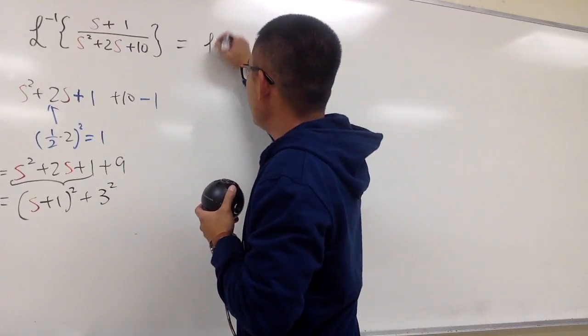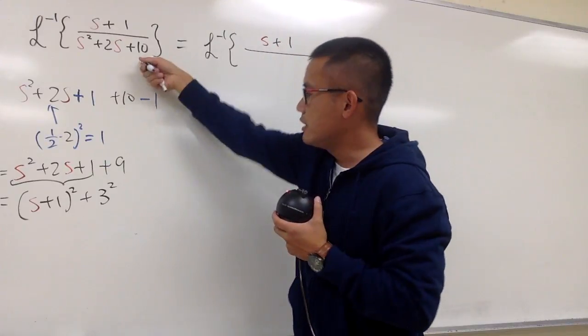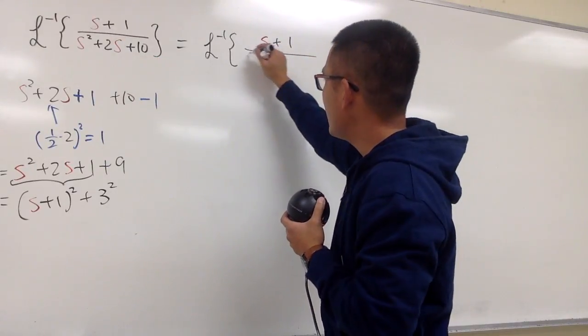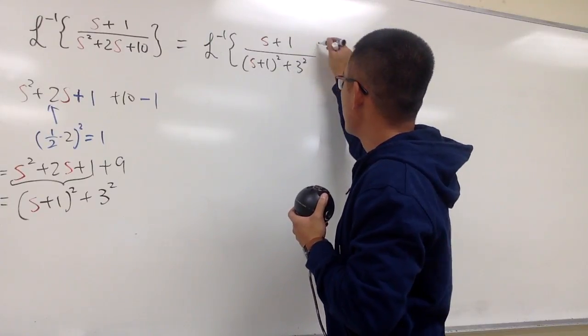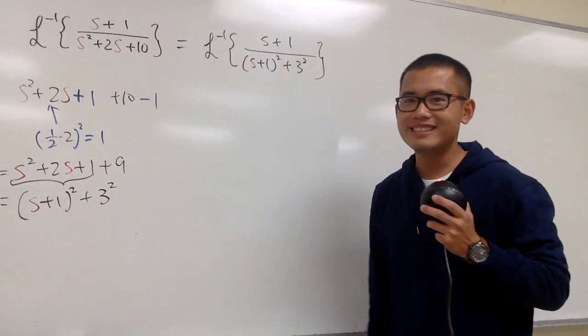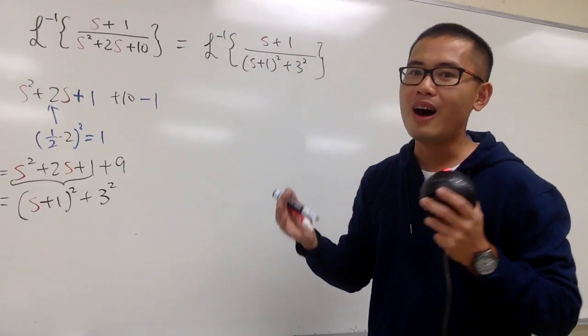on the top, which is s plus 1, over the denominator, which is that. We will have s plus 1 squared plus 3 squared. This is so nice. Why? Because s plus 1 and s plus 1 are the same.